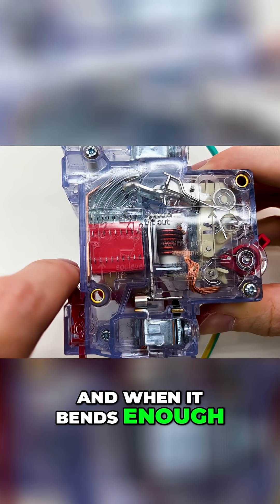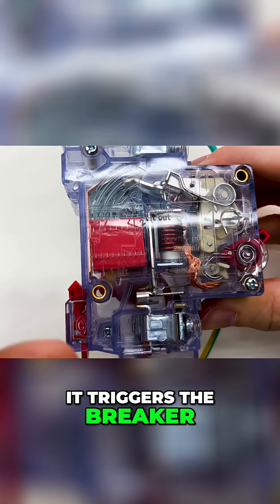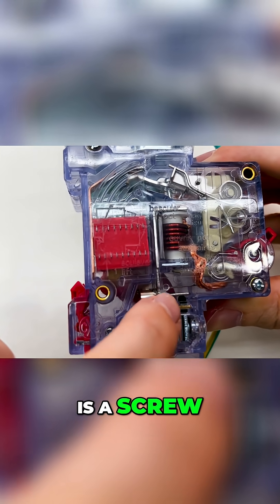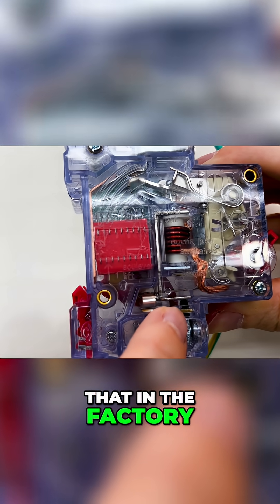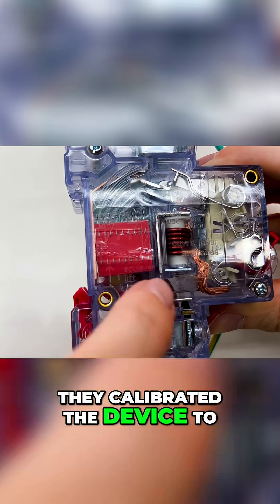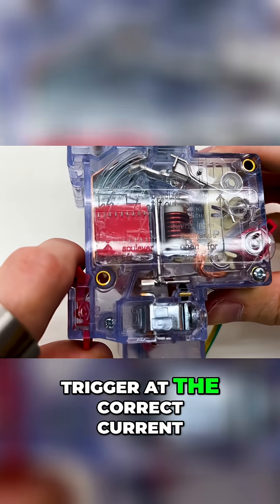And when it bends enough, it triggers the breaker. And on the bottom, you can see there is a screw that in the factory they calibrated the device to trigger at the correct current.